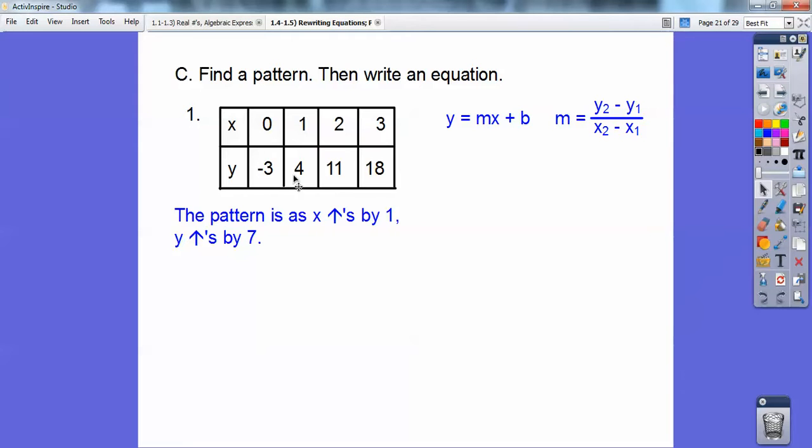Here's some y's here, here's some x's here. So it looks like this could be x1, y1, x2, y2. Or you can even make this one x1, y1, x2, y2. Or this one x1, y1, this one x2, y2. It doesn't matter. I think I chose these ones to be x1, y1, x2, y2 just to get the slope.